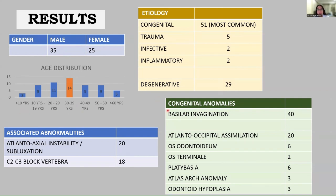Amongst the congenital abnormalities, 40 out of 60 patients had findings of basilar invagination along with other associated CVJ abnormalities. The most common associated finding was atlanto-occipital assimilation, followed by os-odontoidium and platybasia. Atlanto-axial instability and subluxation was seen in 20 patients, and there was associated C2-C3 block vertebrae in 18 patients.